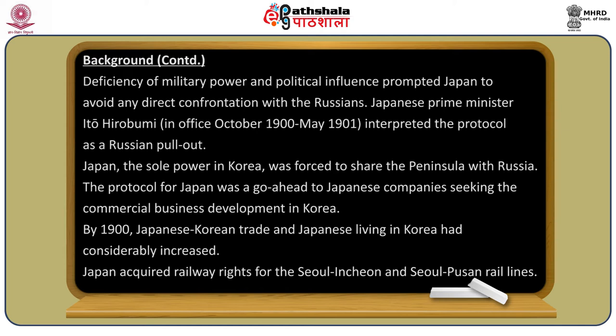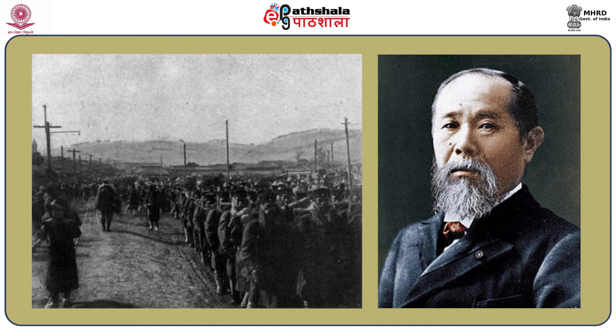The protocol signed on 22nd April 1898 forced Japan to abandon its political and military dominance over Korea. Deficiency of military power and political influence prompted Japan to avoid direct confrontation with the Russians. Japanese Prime Minister Ito Hirobumi, in office from October 1900 to May 1901, interpreted this protocol as a Russian pullout. Japan, now forced to share the peninsula with Russia, saw the protocol as a go-ahead to Japanese companies seeking commercial business development in Korea.